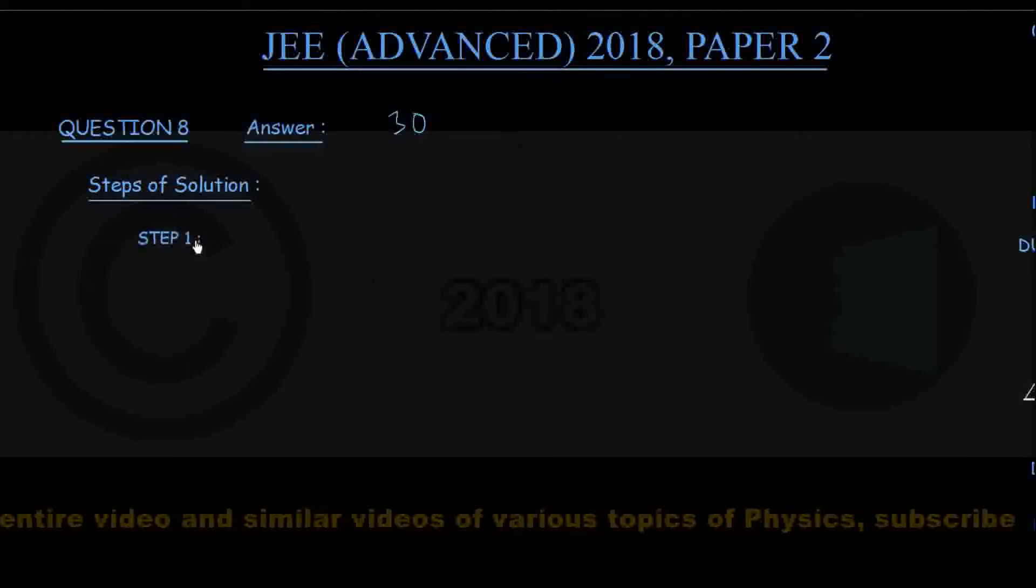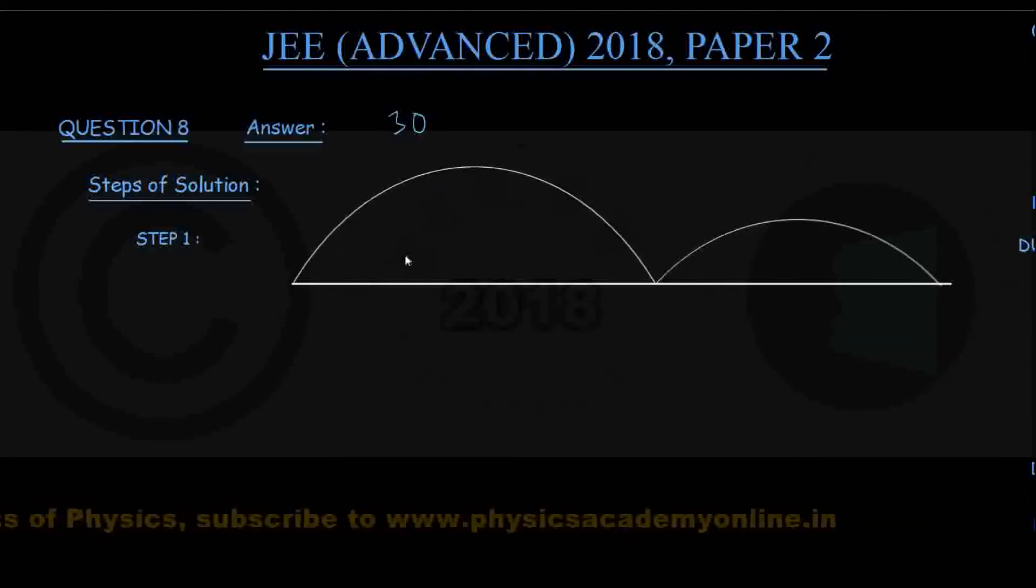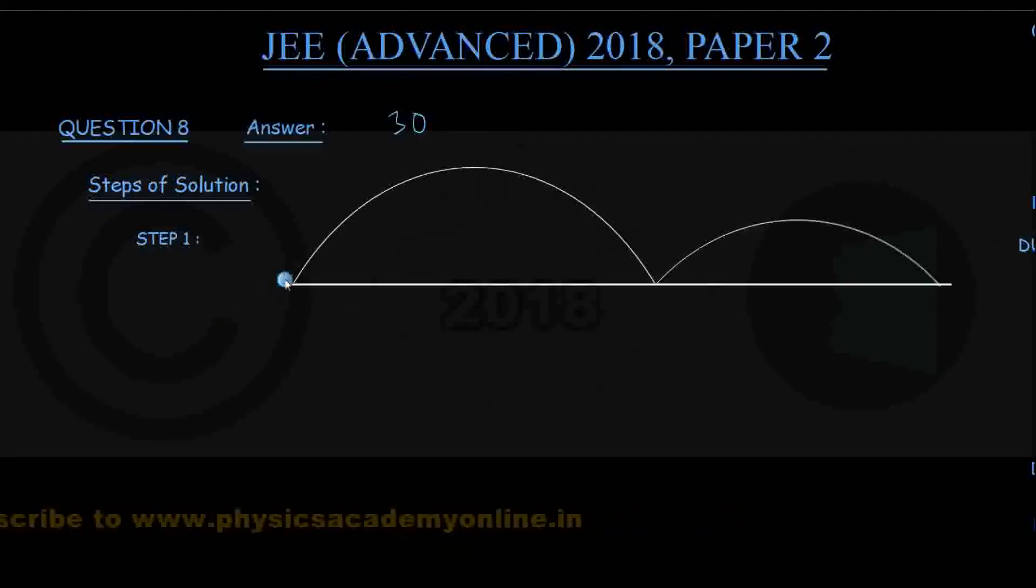In step number 1, I suggest you draw a rough figure and take down the information given in the problem. So here is a diagram showing the motion of the ball.